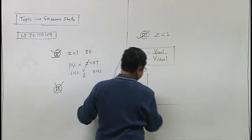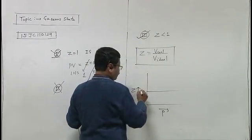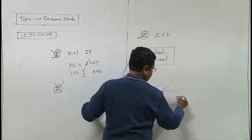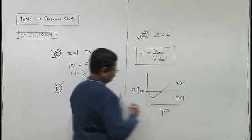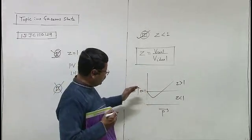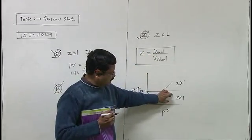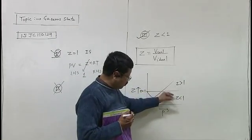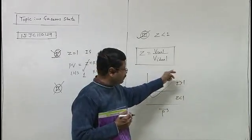The graph is Z versus pressure. Z equals 1 is at low pressure, and high is less than 1 around 0 degrees C. This graph shows hydrogen, helium, and all other gases. Hydrogen and helium at 0 degrees C show attraction, negative deviation, gas more compressible to liquefy. Repulsion makes gas less compressible.